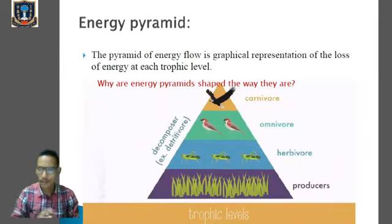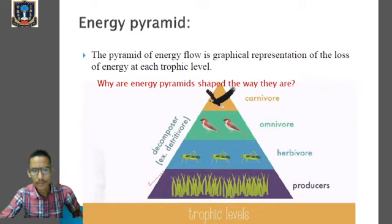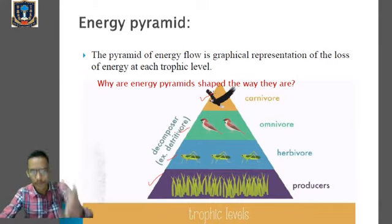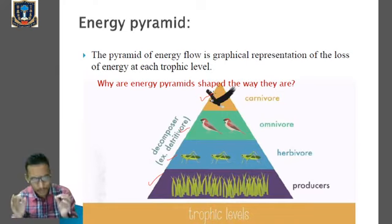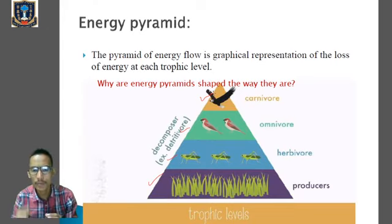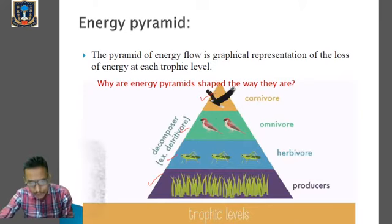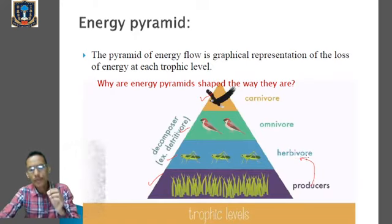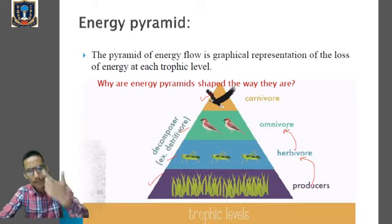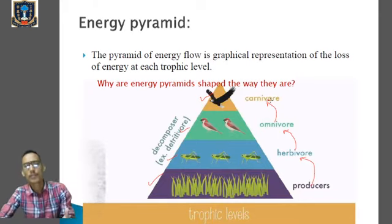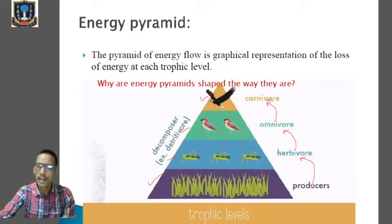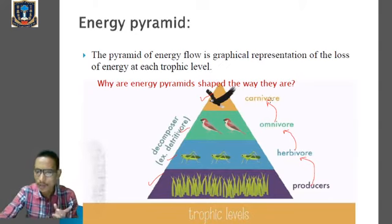In the given figure you can see the trophic levels, which we have done in previous classes. At the first trophic level we have the producers, then primary consumers, secondary consumers, and tertiary consumers. The pyramid of energy flow is the graphical representation of the loss of energy at each trophic level. Whenever energy is transferred from producer to herbivore, a minimum amount is lost; similarly from herbivore to omnivore, and from omnivore to carnivore, the minimum amount of energy is lost.